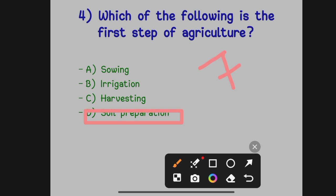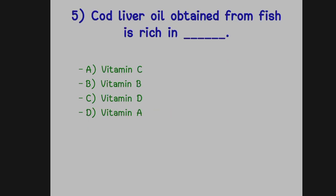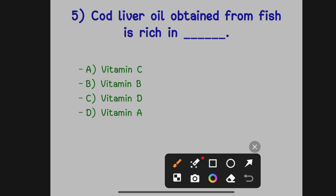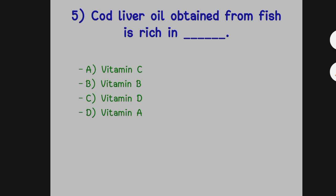The next question: cod liver oil obtained from fish is rich in dash. Option A: Vitamin C. Option B: Vitamin B. Option C: Vitamin D. Option D: Vitamin A. The correct answer is Option C, Vitamin D.